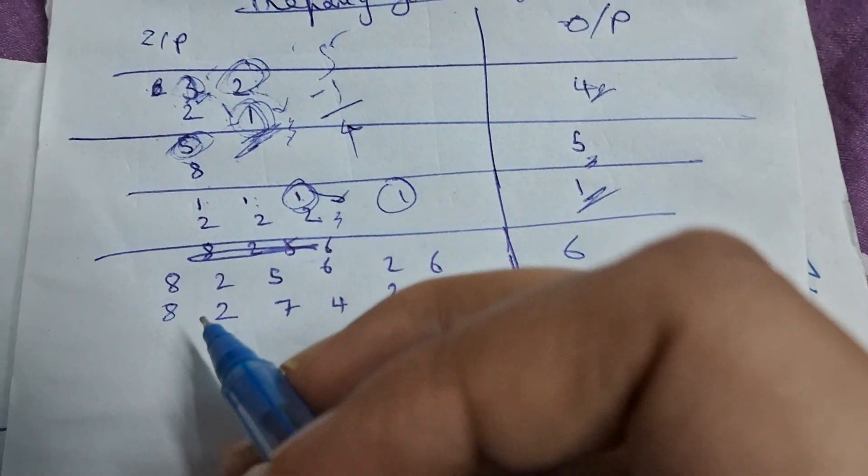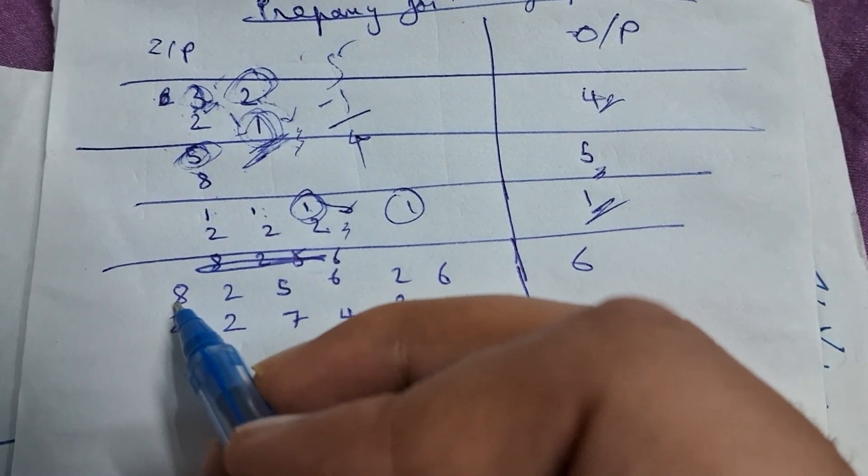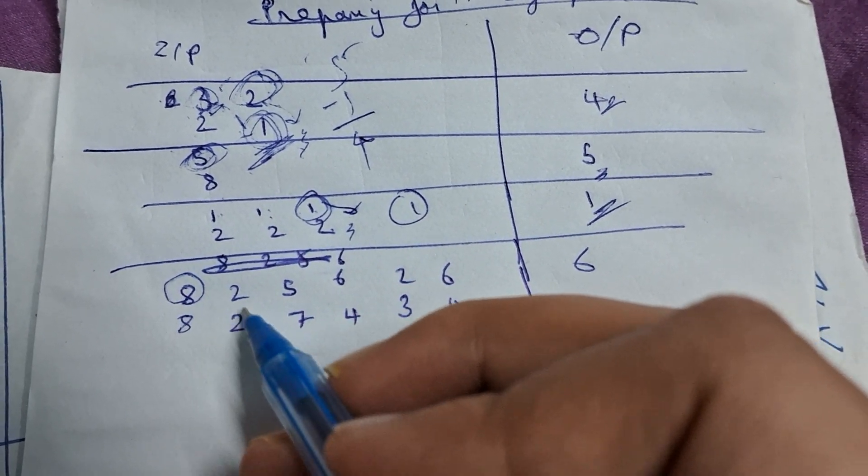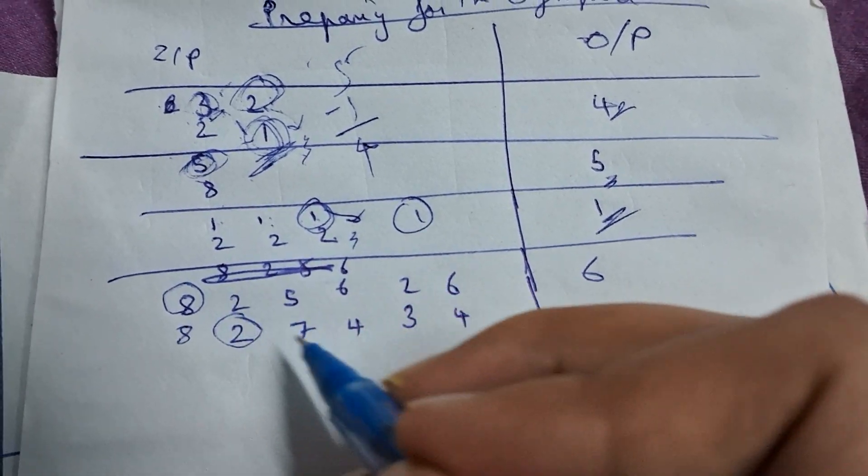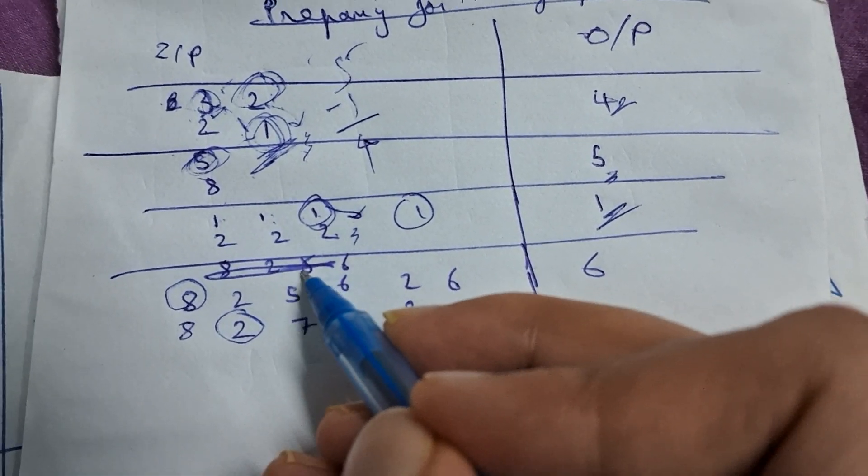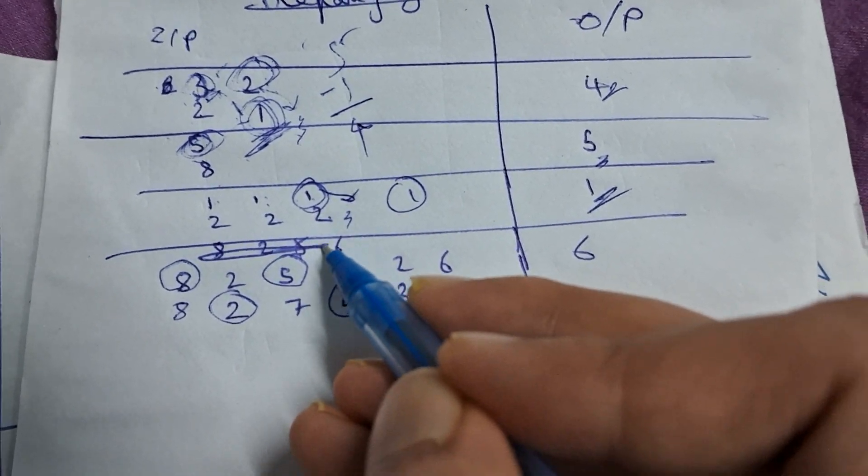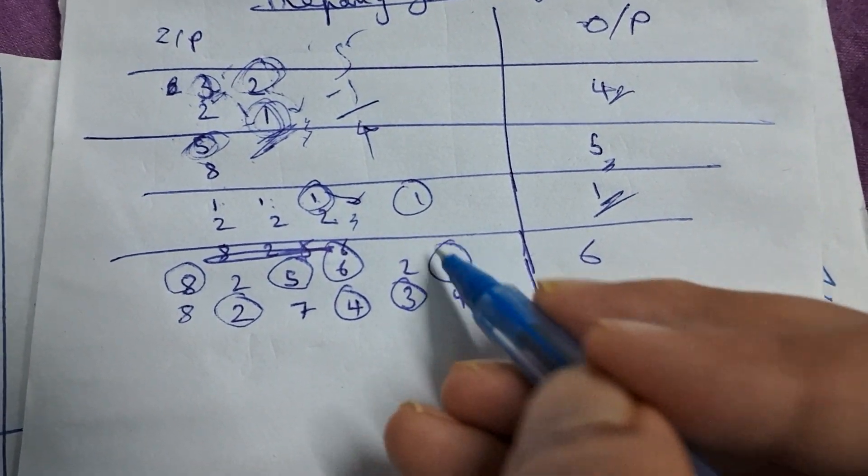And for this case, what you are going to do is, you are going to take 8 minus 2, then 5 minus 4, then 6 minus 3, and then this 6.